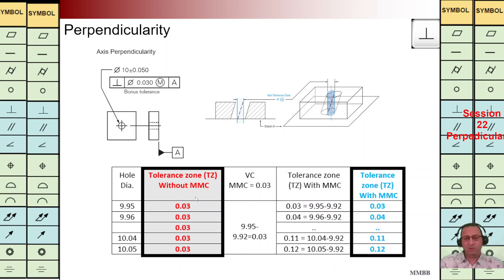In this table, the first column shows different values of hole diameter. If we don't have any modifier the Tz is constant for different hole diameters. But when we have MMC, for the smallest hole diameter listed in the third column, the Tz should be 0.03. For other values of hole diameter we calculate what the Tz should be, as listed in the last column — this is the dynamic tolerance zone.